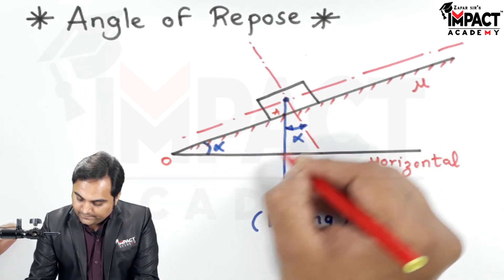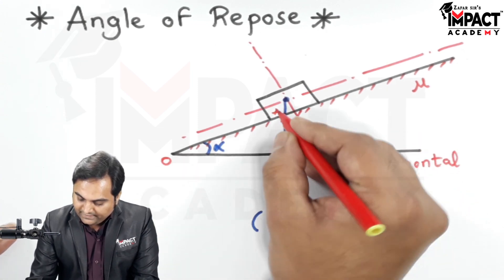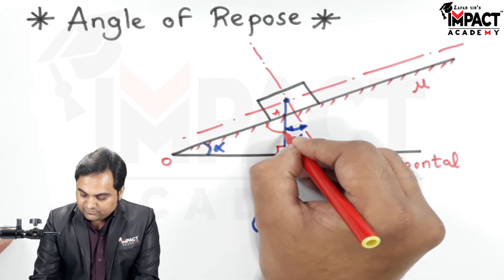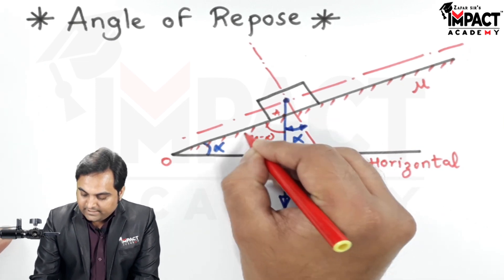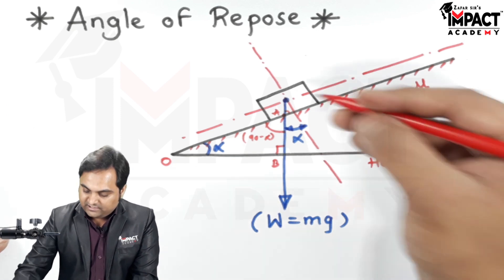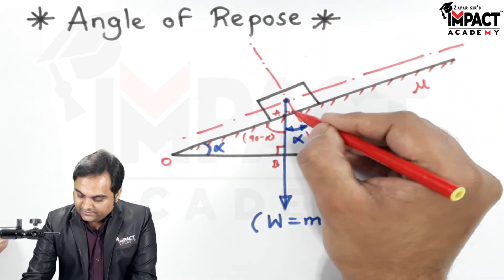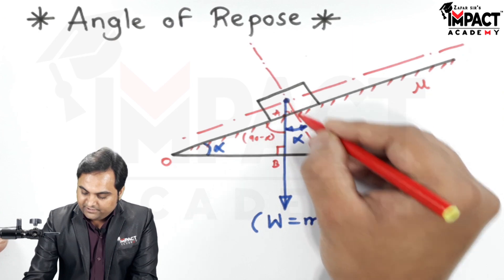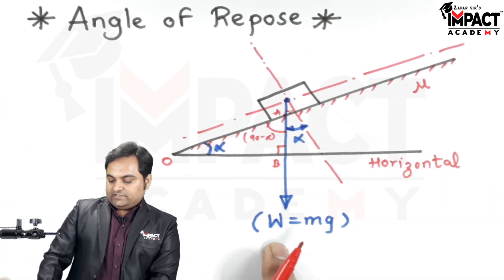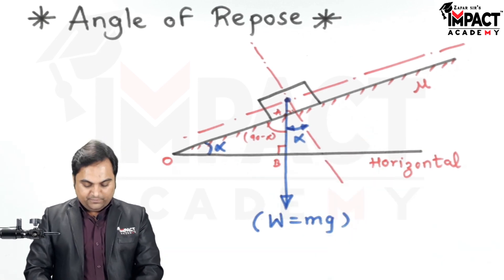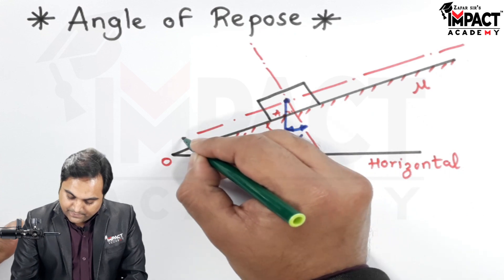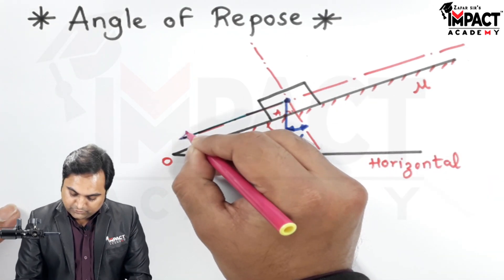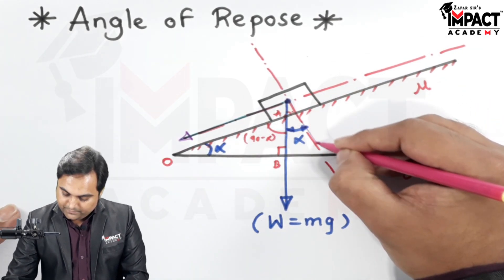I will call it as triangle OBA. Here it is a perpendicular line, so this angle is 90 degrees. This is alpha, so this angle becomes 90 minus alpha, and when this is 90 minus alpha, this opposite angle is also 90 minus alpha. So the remaining angle is alpha over here. Since the weight is inclined at an angle of alpha, it would be having two components — one which is parallel to the plane and the other component would be perpendicular to the plane.